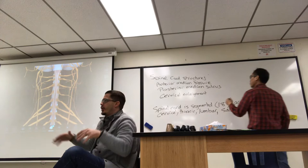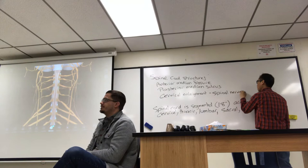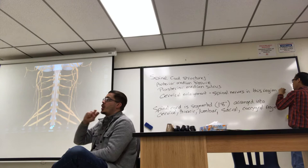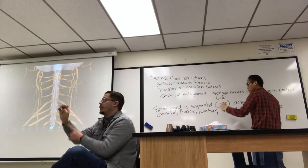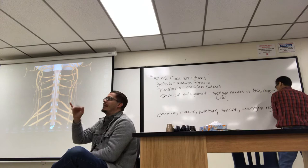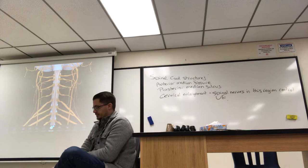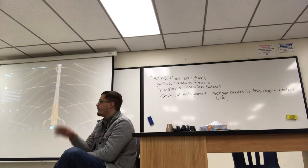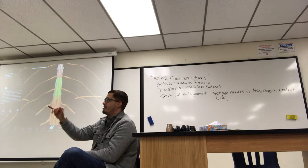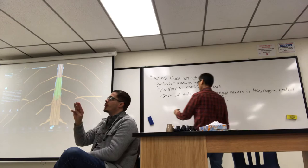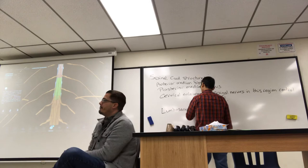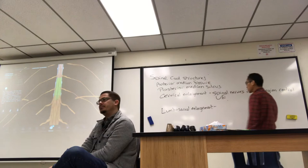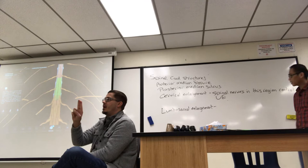The cervical enlargement controls the upper extremity — the spinal nerves from that region control the upper extremity. There is also a lumbosacral enlargement, the part highlighted in green that is slightly wider. The spinal nerves coming off that region control the lower extremities.